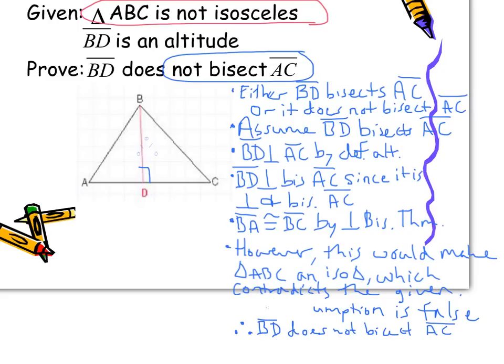And there we have it — there's our proof by contradiction. We assumed the negation of the proof, then went through with that assumption along with the given that BD was an altitude, established a perpendicular bisector, found that the two segments are congruent, and that contradicts our given. Therefore our assumption is false, and BD does not bisect AC. That's our proof by contradiction.